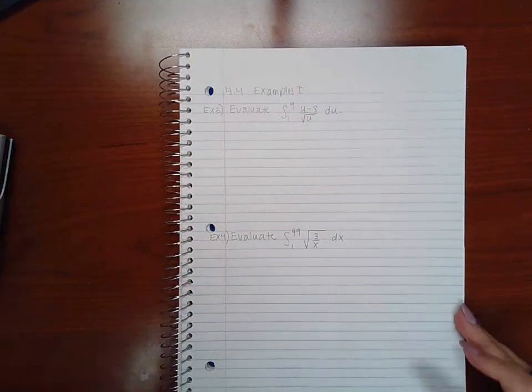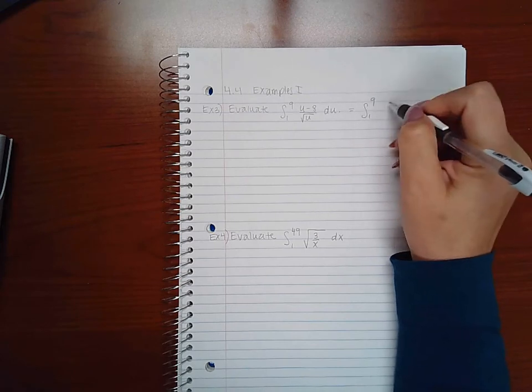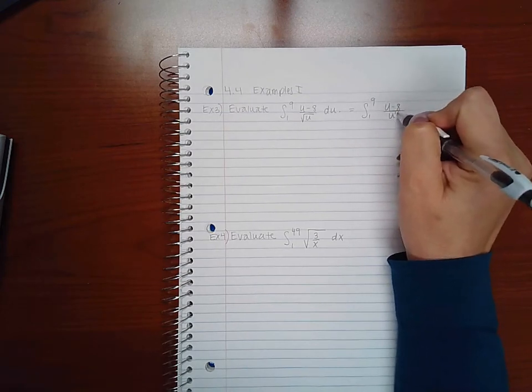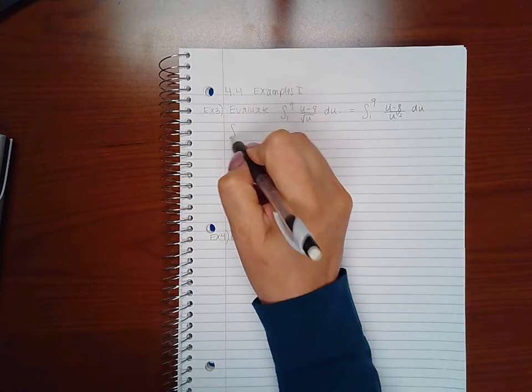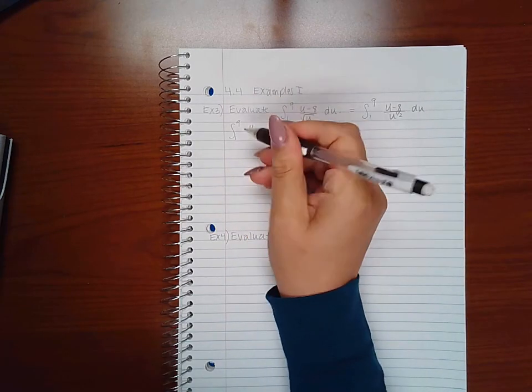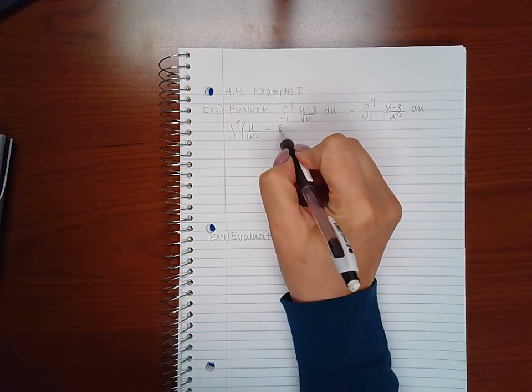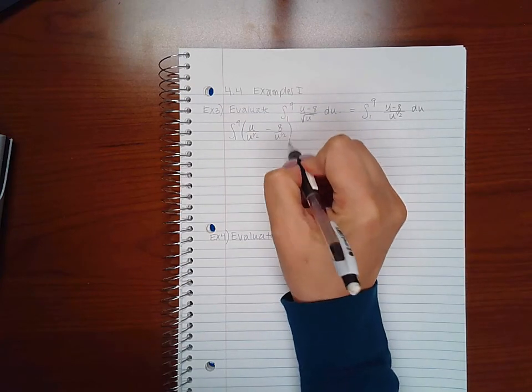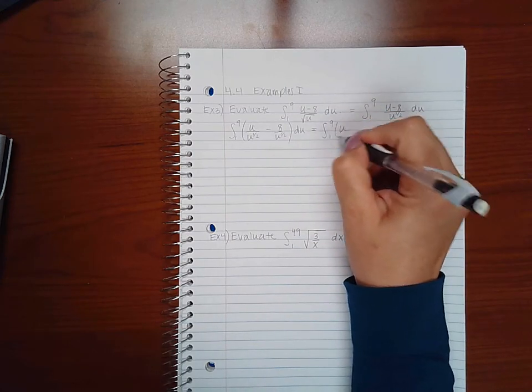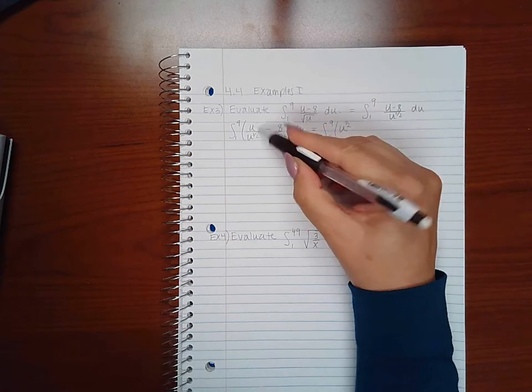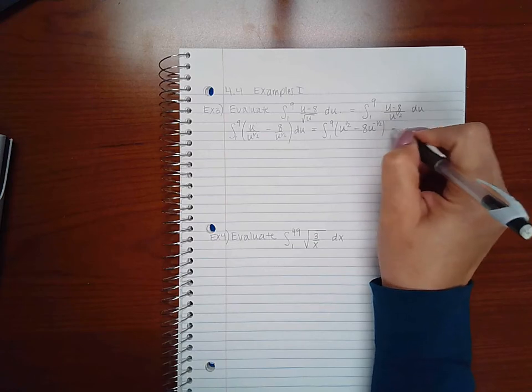So this one has us evaluating this. We know we cannot evaluate that with radicals. So this is actually u to the half. And we usually don't leave it as a fraction. We separate it. So u over u to the 1 half minus 8 over u to the 1 half. And then we simplify those fractions, so we get u to the 1 half, because 1 minus 1 half is positive 1 half, and 8u to the negative 1 half.